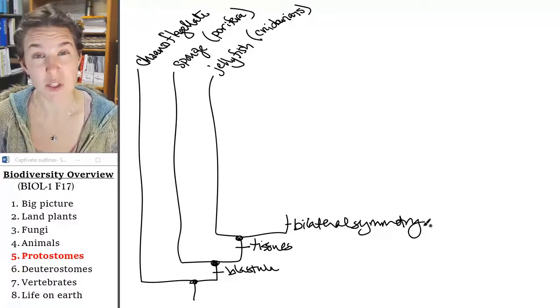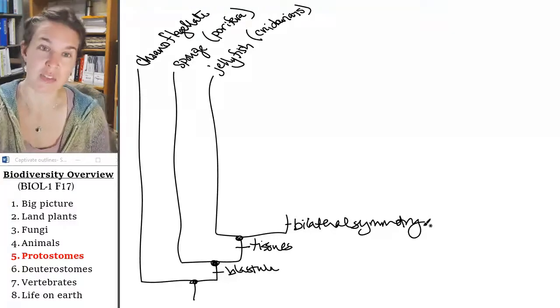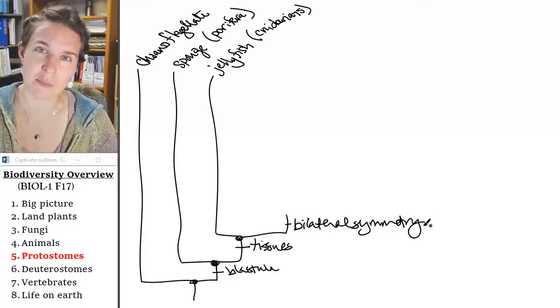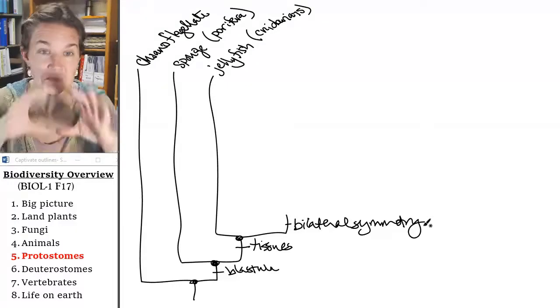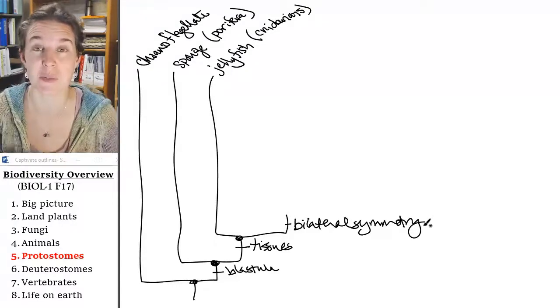There are some exceptions. If you think about jellyfish — are they bilaterally symmetrical? No, they're round. They're radially symmetrical.